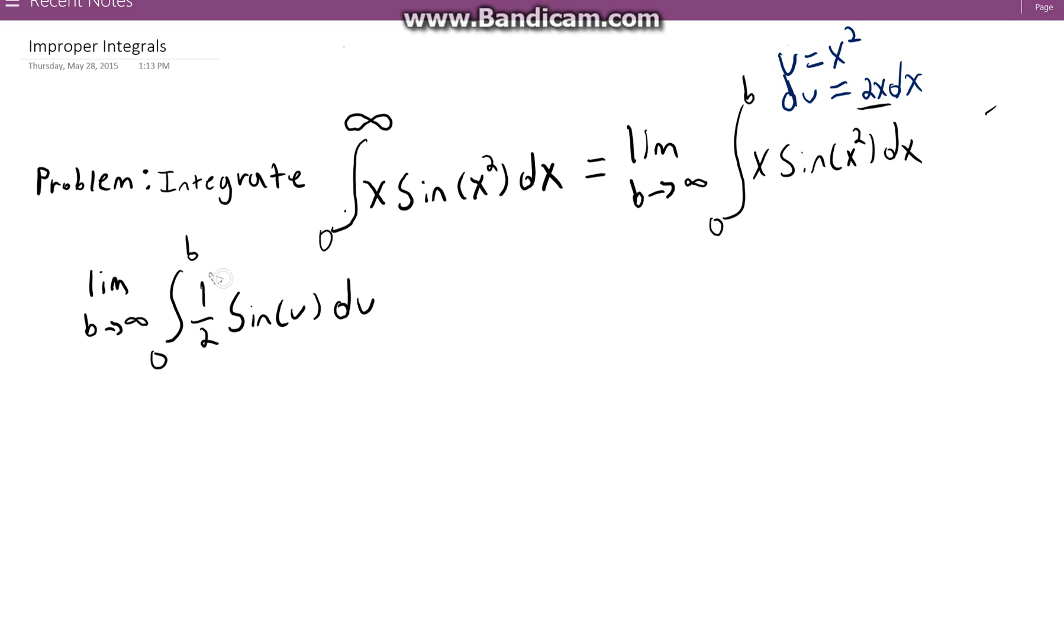So I like to just take my coefficients out. Now obviously this is pretty easy to evaluate. The integral of sine x is just negative cosine x. So one half times the limit as b approaches infinity—actually since we're evaluating we don't need this. Negative cosine u from zero to b.